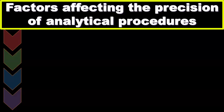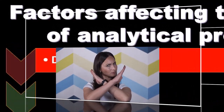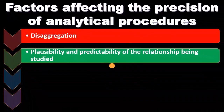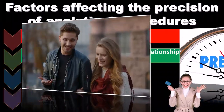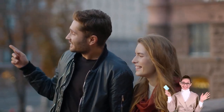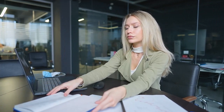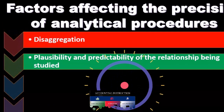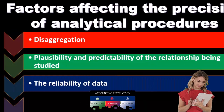Factors affecting the precision of analytical procedures. One: desegregation, which is one of the major types of internal controls. If we have proper desegregation between duties, we're more likely to have better controls and therefore more reliable data. Two: plausibility and predictability of the relationship being studied. When we think about the relationship, we're thinking about ratio analysis — comparing numbers — and there could be different degrees of what the plausible relationship will be.